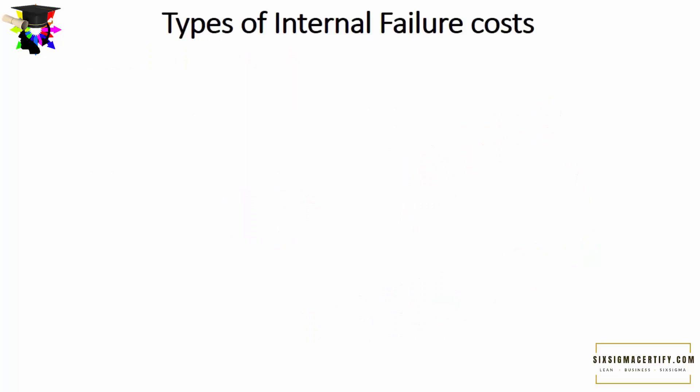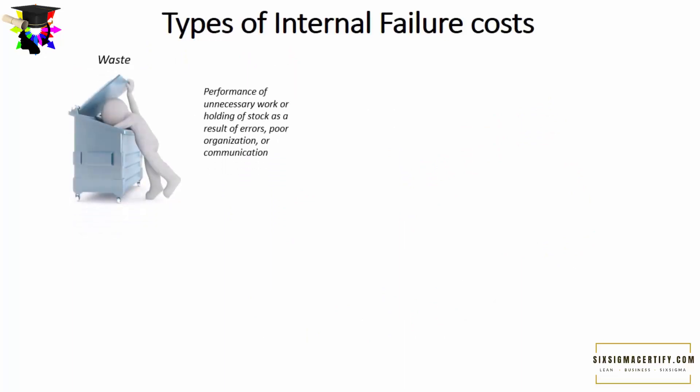The first type of internal failure cost is the cost of waste. These costs arise from the performance of unnecessary work or holding of stock as a result of errors, poor organization, or poor communication. Holding stock involves costs for the time and space required to hold those raw materials, and these naturally fall under internal failure costs.